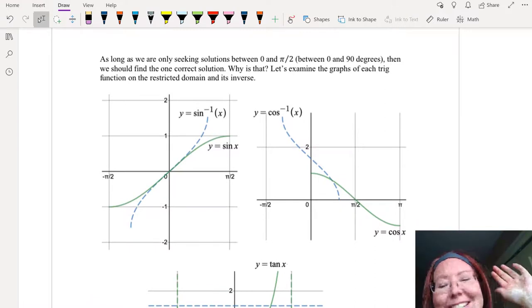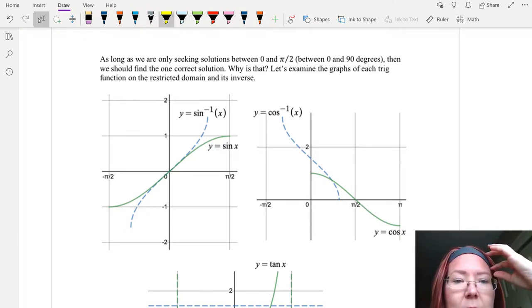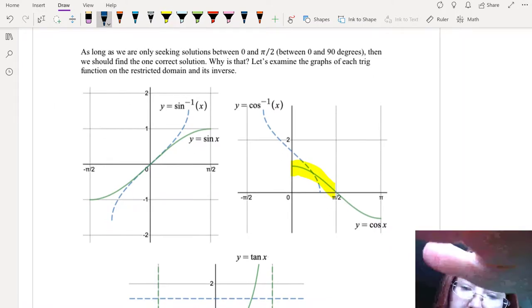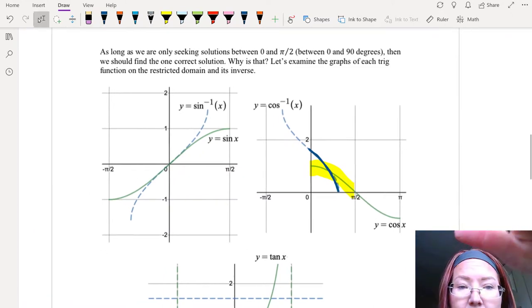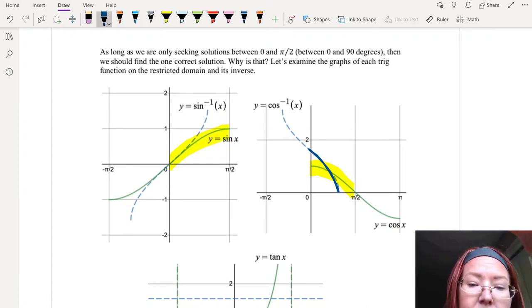If we look only between 0 and pi over 2 for our graphs of sine, cosine, and tangent, then the inverses only have positive values. So let's just take a look at that. If we look at y equals cosine x between 0 and pi over 2, the inverse sketched in here has only positive values. And if I look at 0 to pi over 2 for sine here, the inverse has only positive values right here. Same thing for tangent.